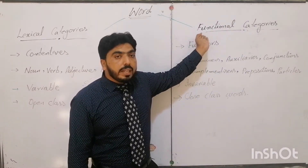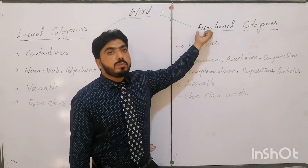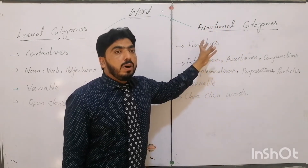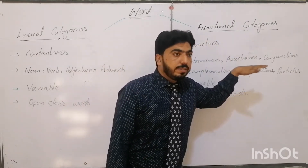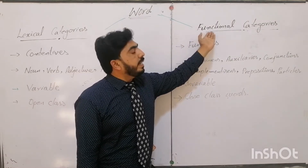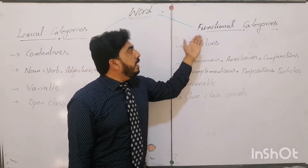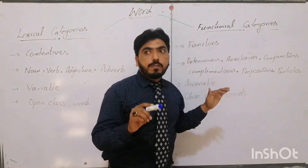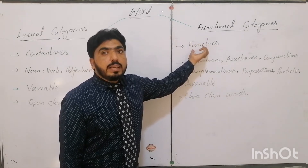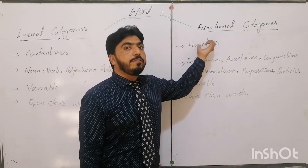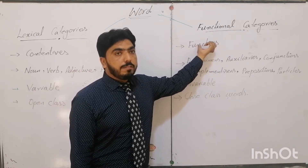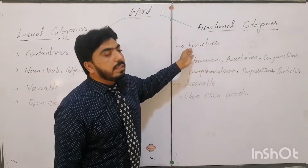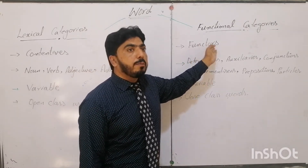On the other hand, functional categories — as the word suggests, function — perform the functional aspect of the sentence. They serve the functional relationships among the different constituents of the sentence. These categories don't take part in conveying meaning; rather, they take more part in establishing grammatical relationships amongst different constituents or different words of a sentence. That is why we call these categories functors. So, lexical categories are contentives and functional categories are functors, on the basis of the functions performed by these categories.